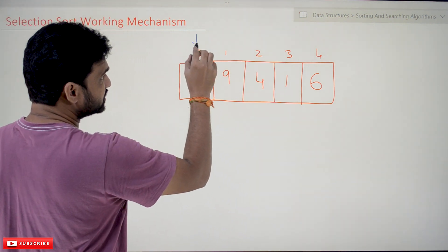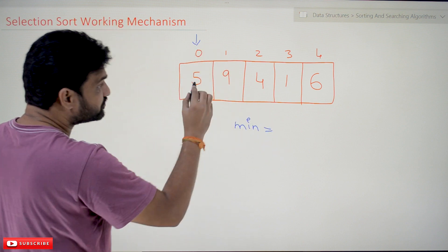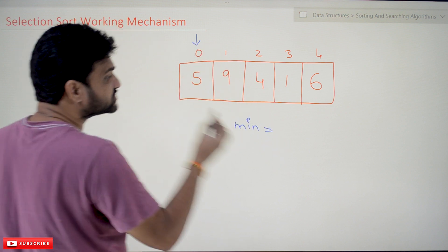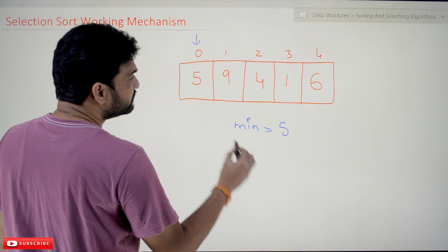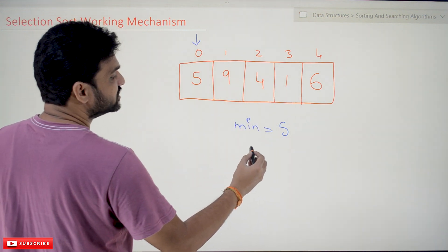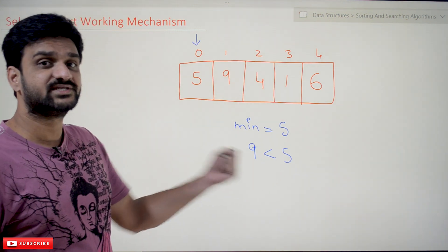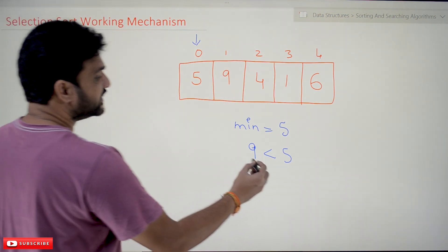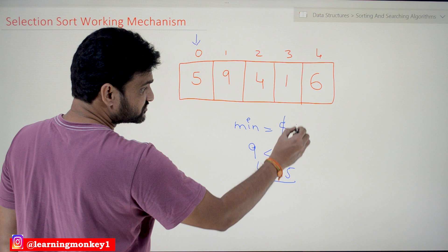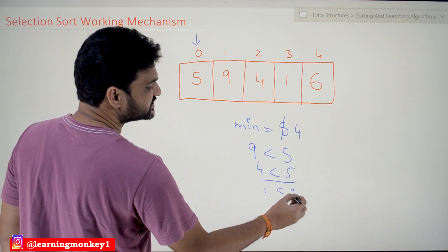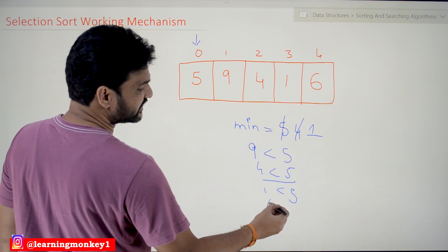We start at the 0th index and consider the element in that position — let's say 5 — as the minimum element. Now we compare it with all remaining elements. Is 9 less than 5? No. Is 4 less than 5? Yes — so the new minimum element is 4. Is 1 less than 5? Yes — so the latest minimum element is now 1. Is 6 less than 5? No, it is not true.